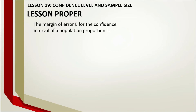Now, the margin of error E for the confidence interval for a population proportion uses the formula involving P-hat and Q-hat. This is the interval estimate for the population proportion. Margin of error equals the confidence coefficient multiplied by the square root of P-hat times Q-hat over N.